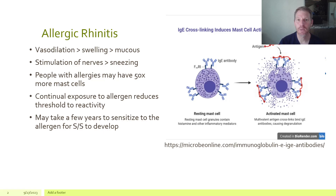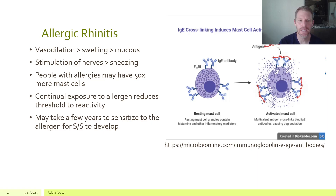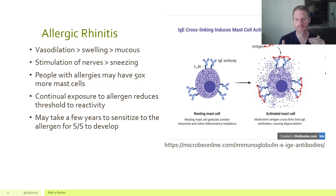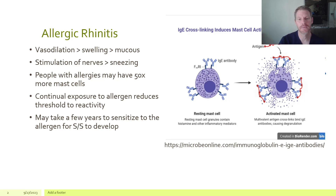It has been found that people who have severe allergies tend to have more mast cells in their system — some studies show up to 50 times more than somebody without allergies. As you're continually exposed to the allergen, your threshold for having allergic symptoms is actually reduced. It takes a few years to develop sensitivity, so it's very uncommon to see it in children under two.